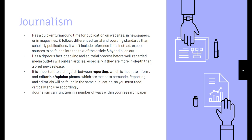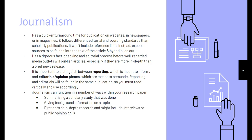Journalism can function in a number of ways within your research paper — these are just examples. Some newspaper articles summarize a scholarly study, for example a new chemotherapy treatment where journalism boils down a scientific study so the general public can read and understand the results. It might give background information on the topic — newspapers do an excellent job of giving a bird's eye view of a whole topic. It might give a first pass at in-depth research, where journalists include personal interviews, public opinion polling, and so on. Or it might just be an expert giving their opinion on the topic.